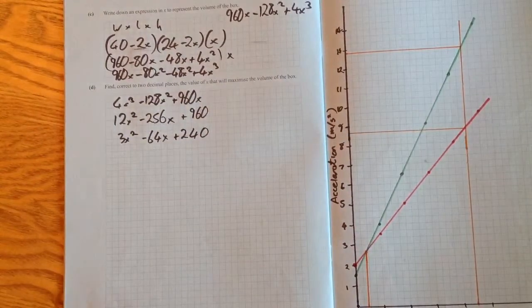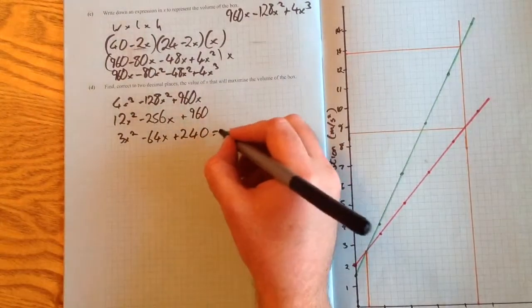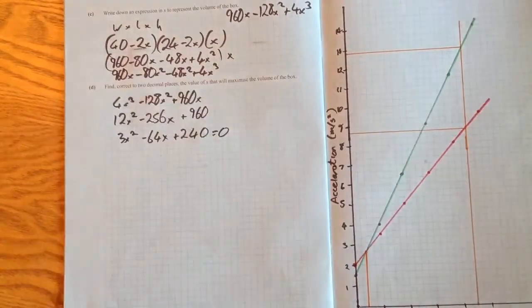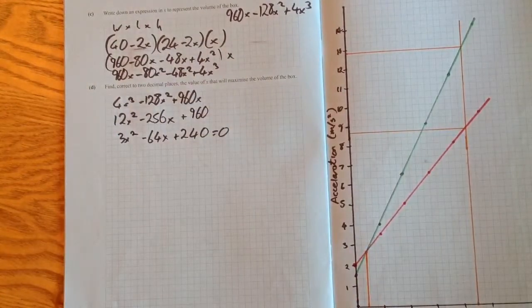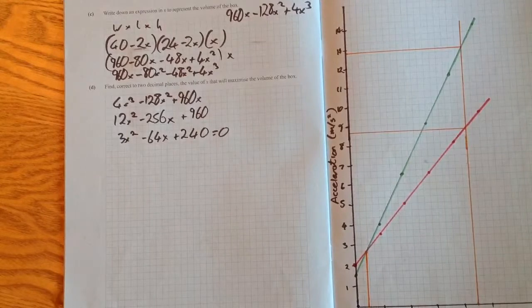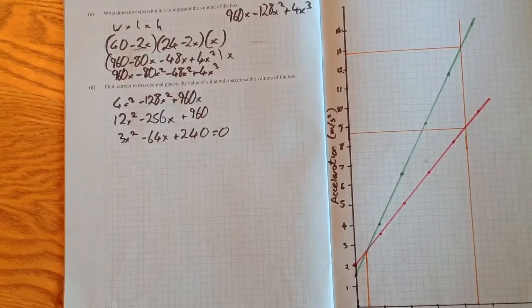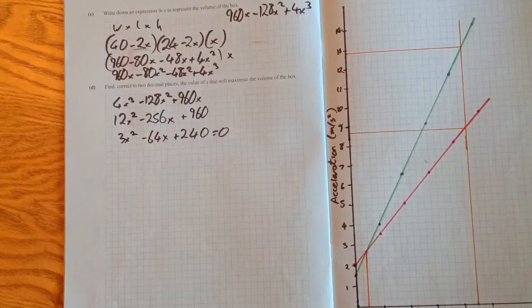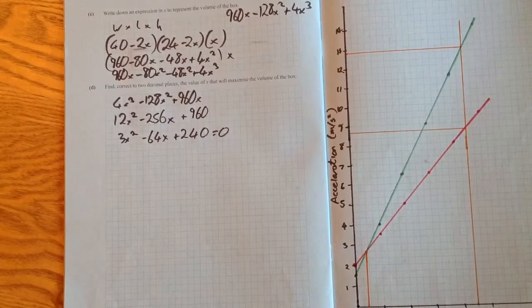Now we have a quadratic, and don't forget we're letting it equal zero, which means we can solve for x. In this particular quadratic, as far as I can see, there's no way to factorize based on the answers I get. So let's have a look.